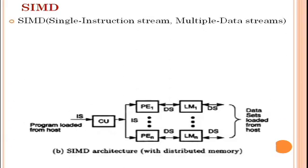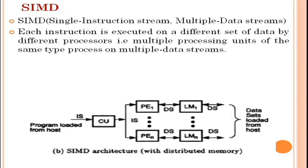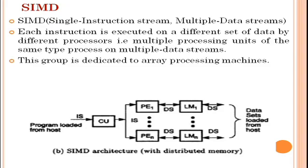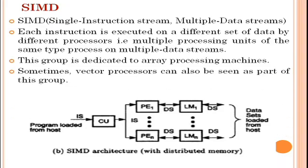SIMD is the Single Instruction Stream and Multiple Data Streams. Each instruction is executed on a different set of data by different processors — that is, multiple processing units of the same type processing multiple data streams. This group is dedicated to array processing machines, and vector processors can also be seen as part of this group.